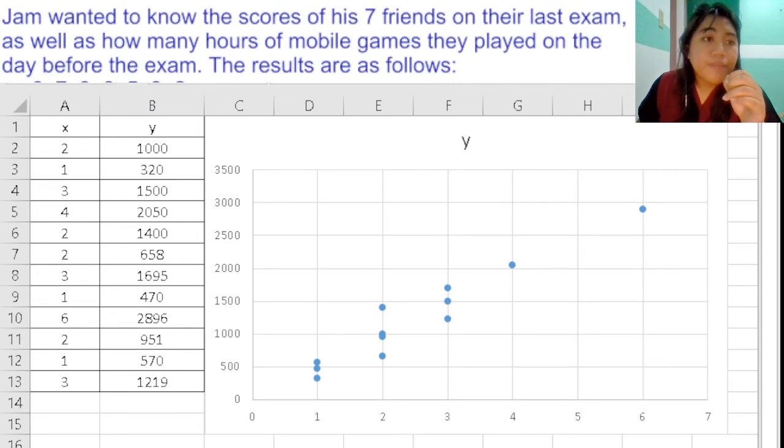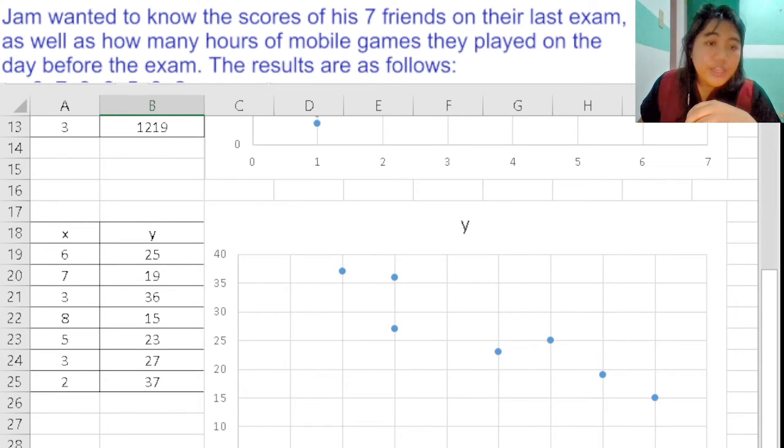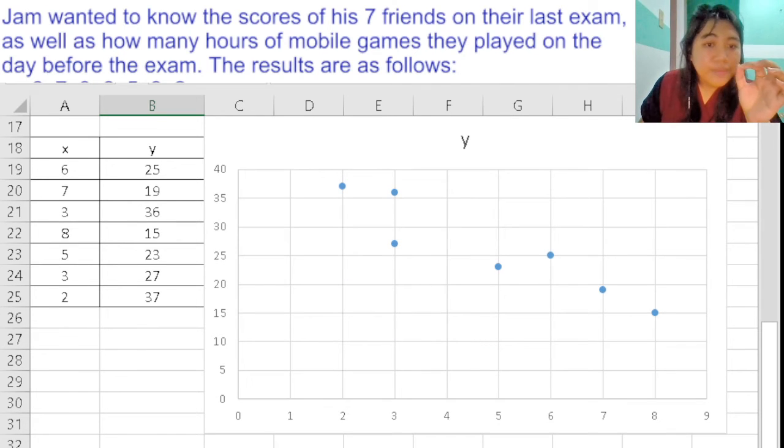Next up, we have the data shown for our next table. You can see the variables here. The variables in this case being the hours of playing mobile games being x.